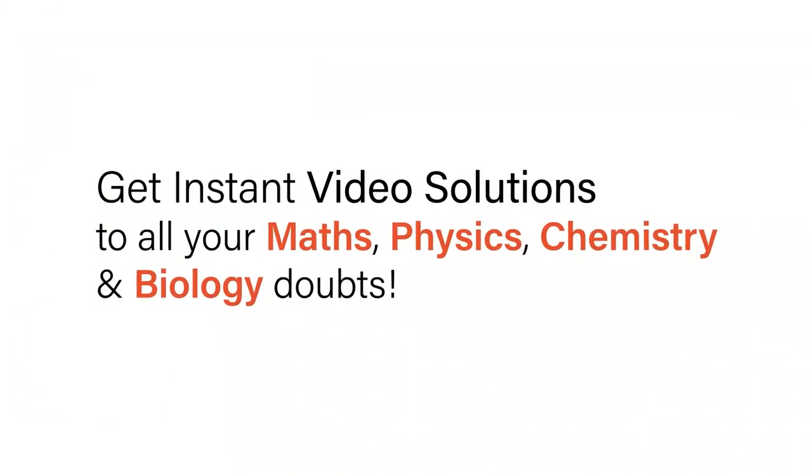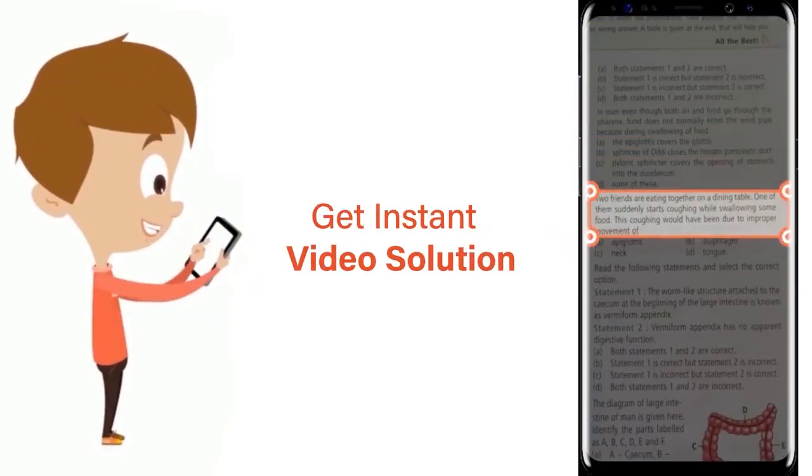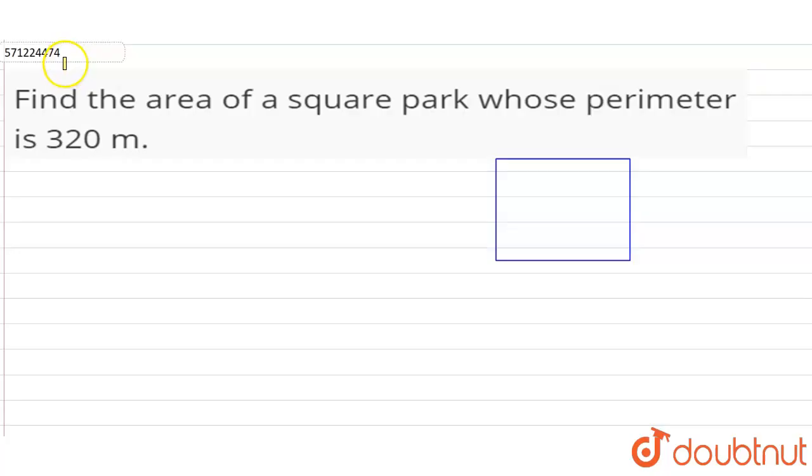With Doubtnet, get instant video solutions to all your math, physics, chemistry, and biology doubts. Just click the image of the question, crop it, and get an instant video solution. Download Doubtnet app today. Hi students, the question is: find the area of a square park whose perimeter is 320 meters.